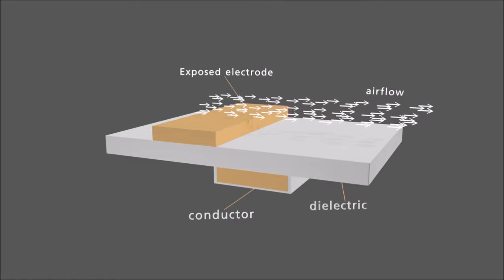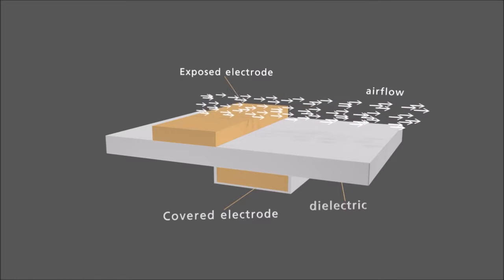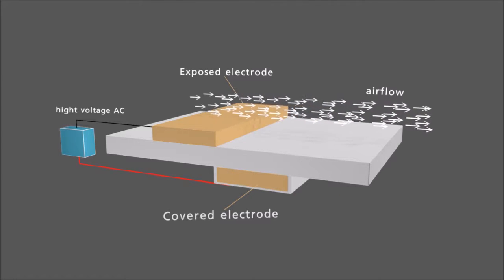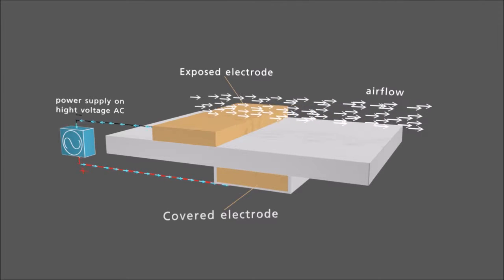One of the electrodes is exposed to air, while the other electrode is covered by dielectric material. A high voltage alternating current input is supplied to the electrodes.